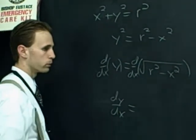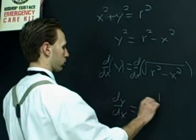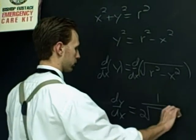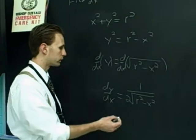While this, you need to do the chain rule. The outer function is the square root function. So it's going to go to 1 over 2 square roots of r squared minus x squared. Multiply that by the derivative of the inside.